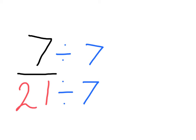7 divided by 7 is going to give me an answer of 1, and 21 divided by 7 is going to give me an answer of 3. Therefore, I can simplify 7 21sts into 1 3rd.